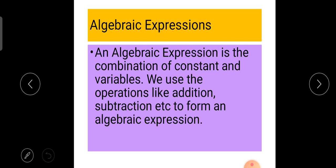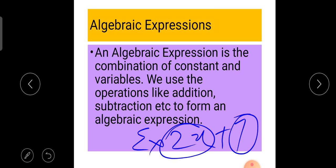An algebraic expression is the combination of constants and variables. We use operations like addition, subtraction, etc. to form an algebraic expression. For example, 2x plus 7. Here 2x and 7 are separated by the addition or subtraction.